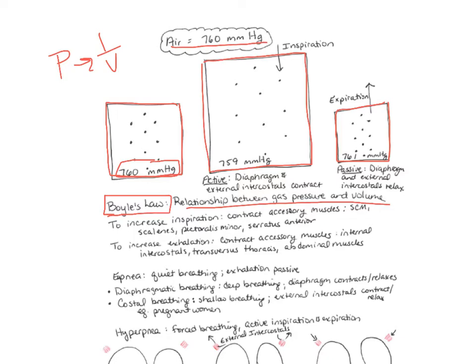This is the basis of inhalation and exhalation. When you're not breathing, pressure inside your lungs equals the environment at 760 mmHg. In order to inhale, you expand the volume inside your thoracic cavity, which decreases the pressure. Air always moves from high to low pressure, so air flows in. To get air in, you expand the volume and decrease the pressure.